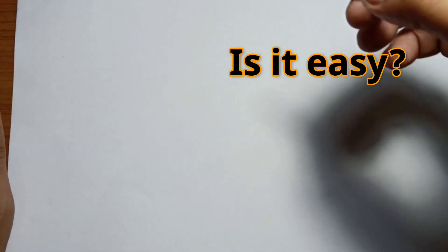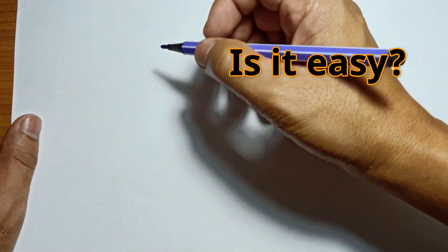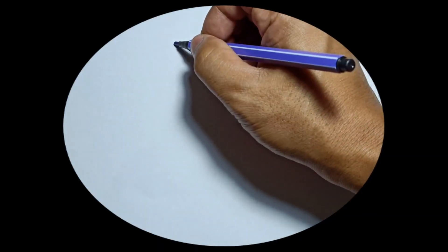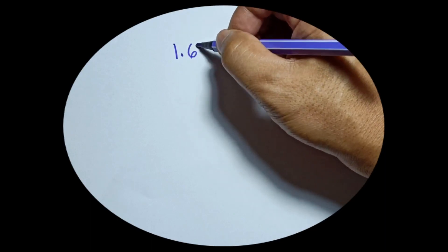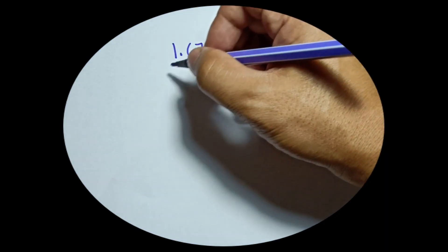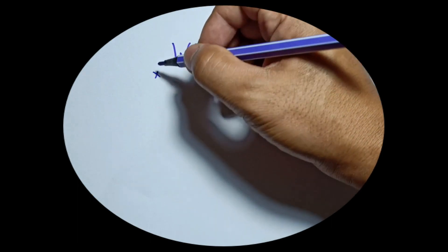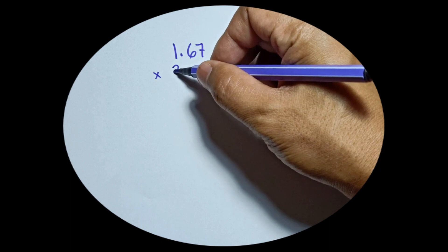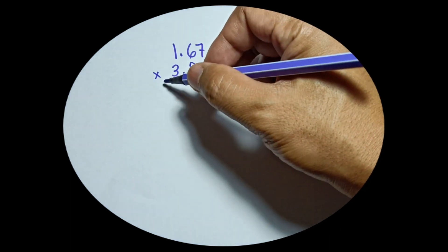So for example, if you have 1.67 times 3.2, let's work through this step by step.